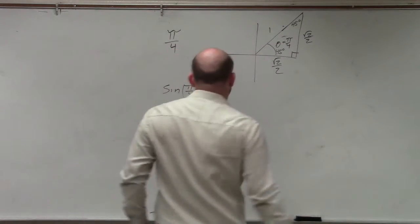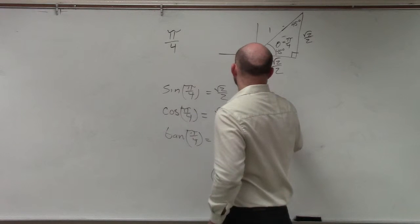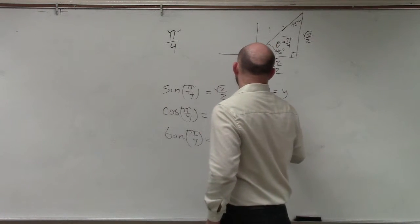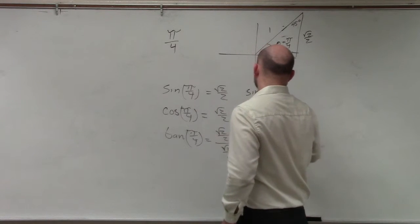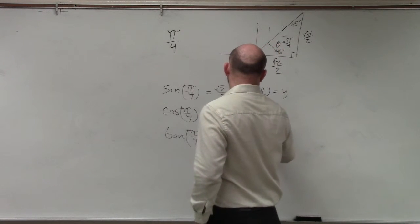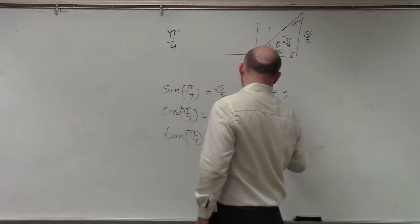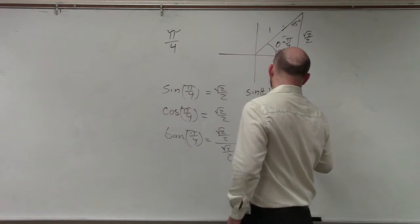Now the last thing I'd like you guys to do is the sine of an angle is equal to the y-coordinate. The cosine of an angle is equal to the x-coordinate. And the tangent of an angle is equal to y over x.